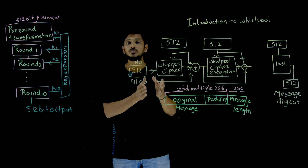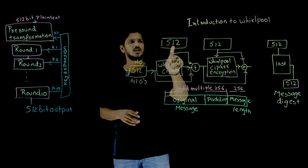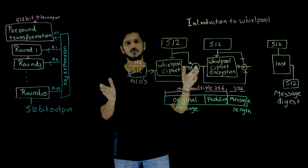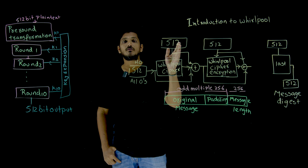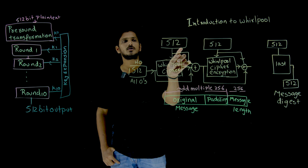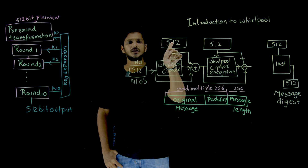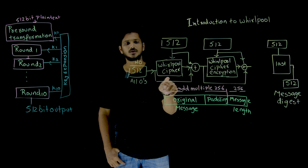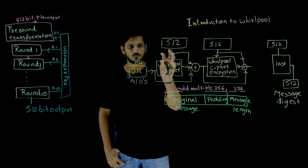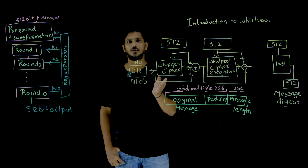Whirlpool uses an iterative method. This means the original message of length X is going to be divided into blocks of size 512 bits. Each 512-bit block is given as input to the Whirlpool ciphertext encryption function, which executes some logic and generates a 512-bit output.